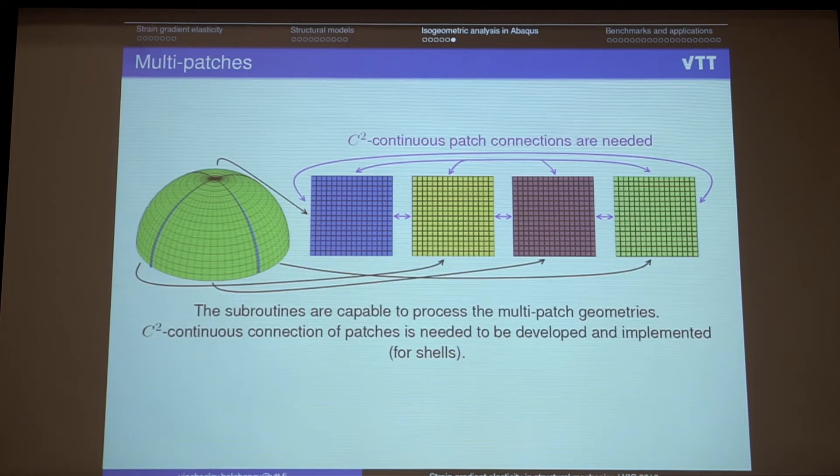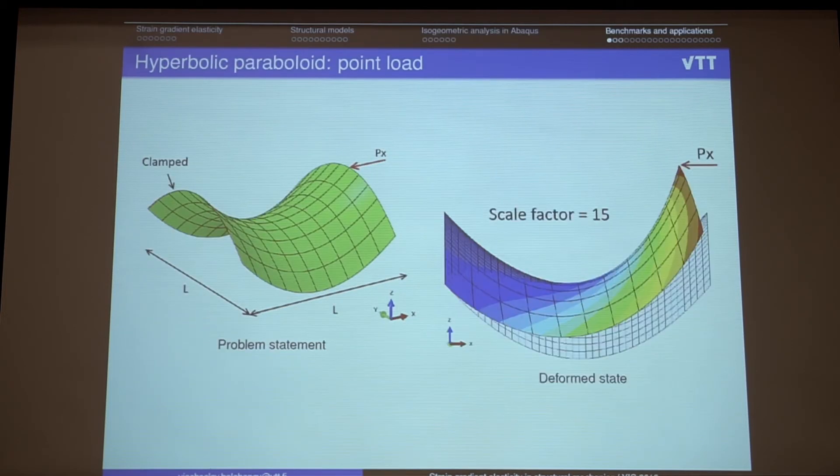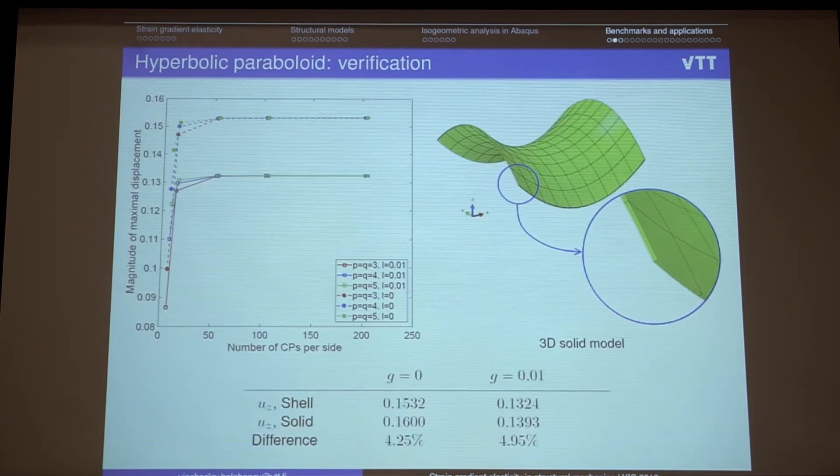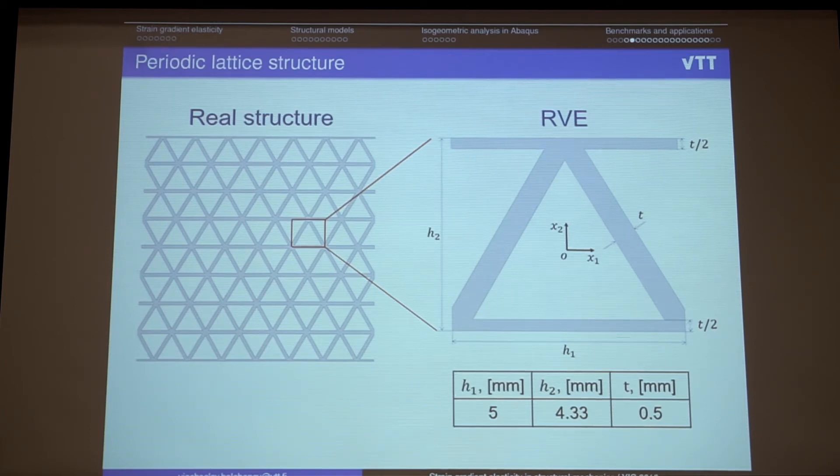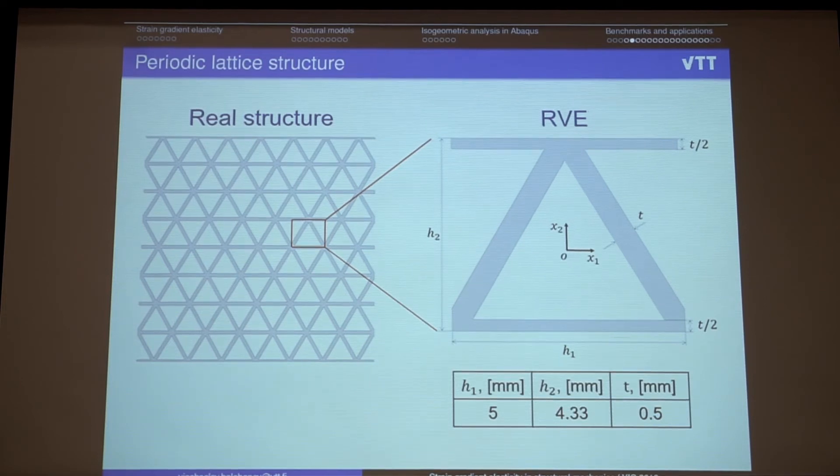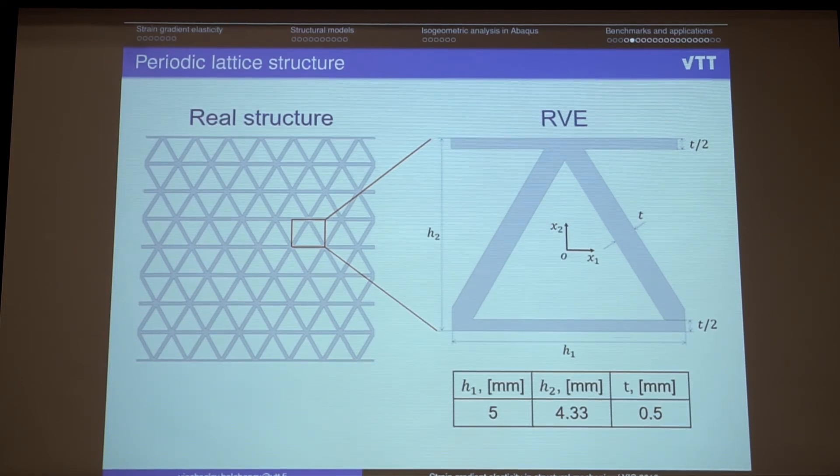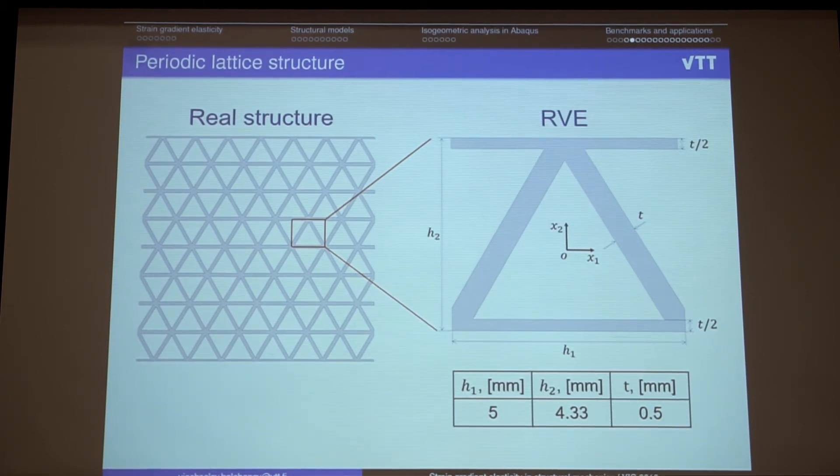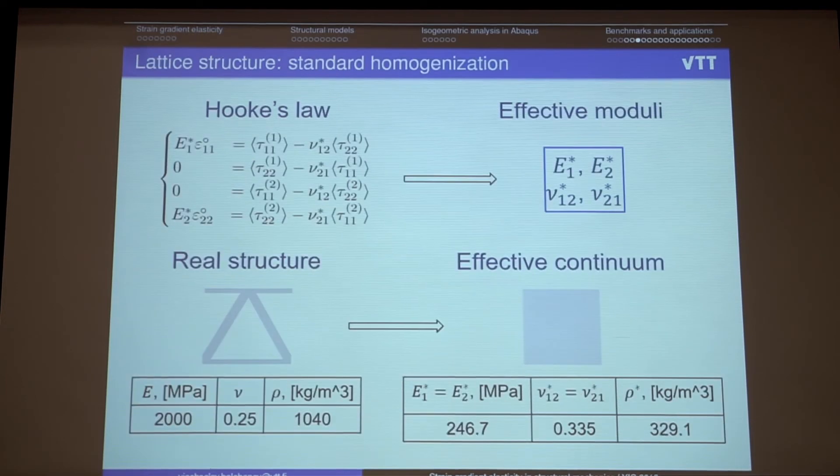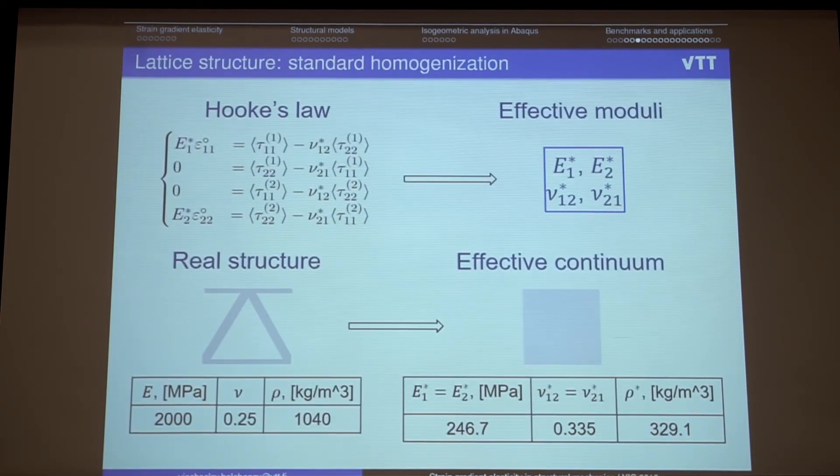The missing point now is processing multipatch geometries. More complex geometries. So maybe to some examples. The most interesting ones. So we have some real structure. We have some real structure made of triangular lattice. We want to do some homogenization. And we have this kind of representative volume element. When we perform classical standard homogenization, we obtain effective continuum.